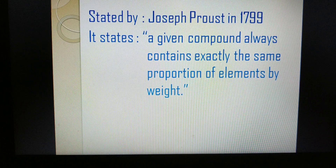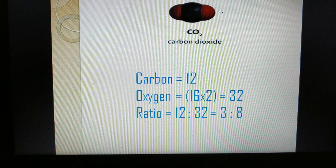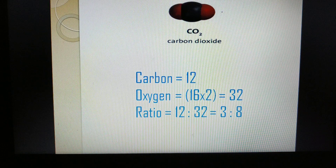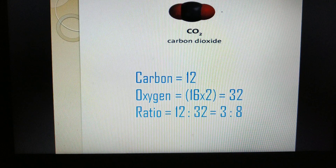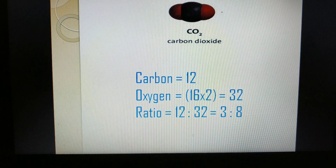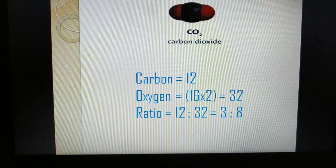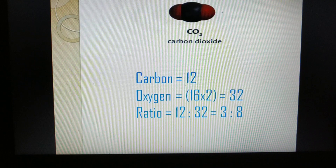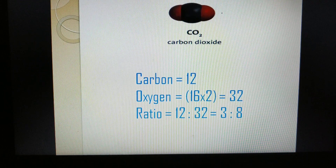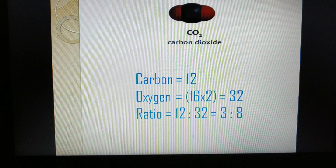To understand this clearly, let's take the example of CO2, that is carbon dioxide. Carbon has an atomic mass of 12 and oxygen has an atomic mass of 16. In CO2 there is one carbon atom and two oxygen atoms, so the mass of carbon is 12 and the mass of oxygen is 16 × 2 = 32. The ratio is 12 : 32.